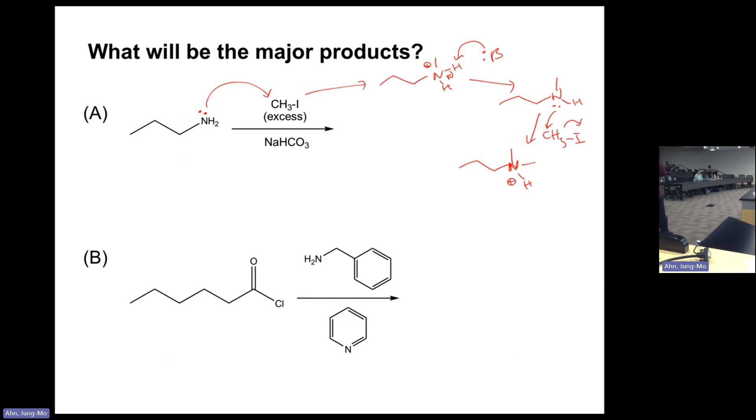The second methyl is going to be added. The base picks up that proton, you get the amine again, it's a secondary amine. That goes for another reaction with a third methyl iodide, then finally it becomes a quaternary amine.